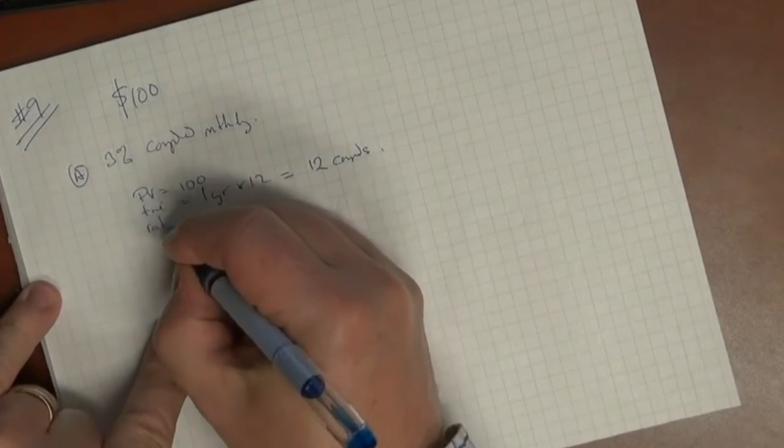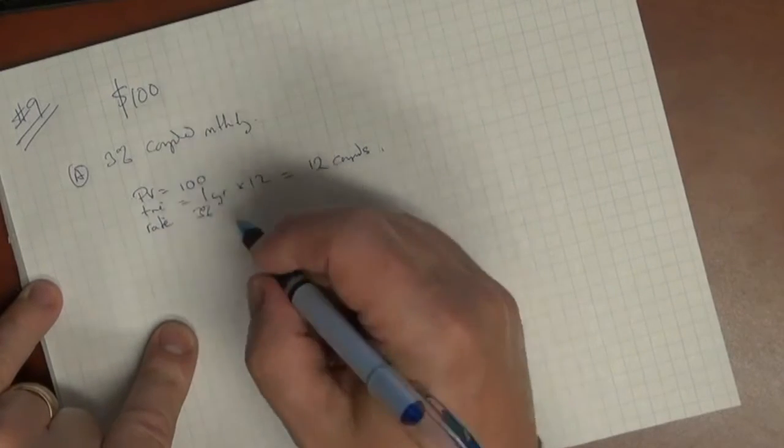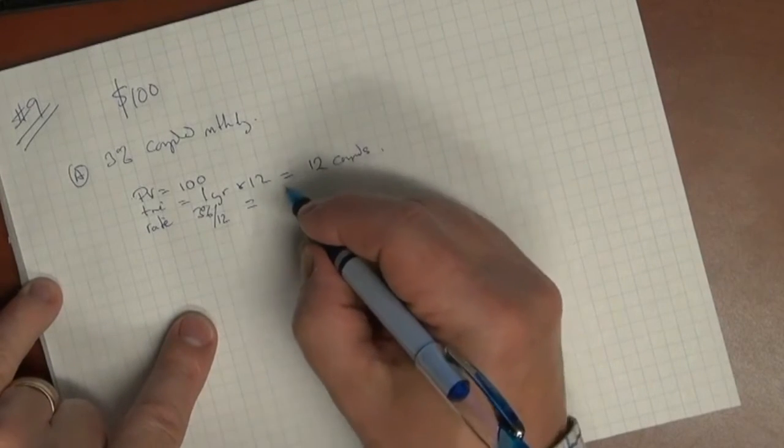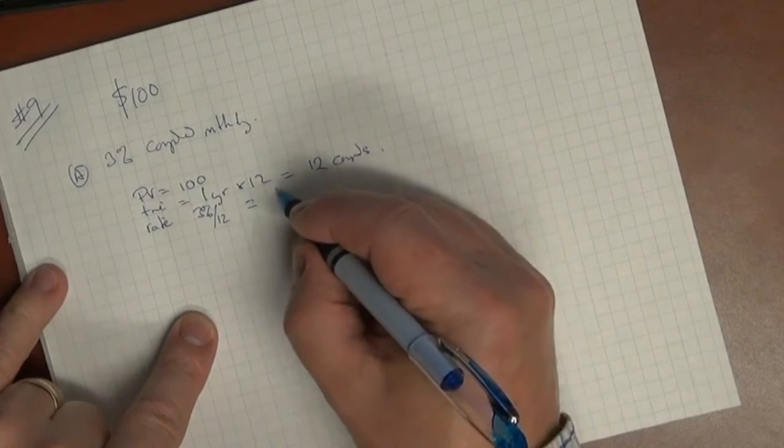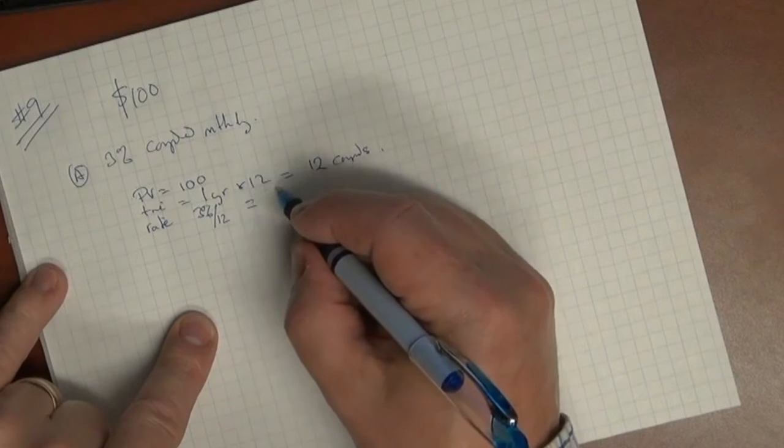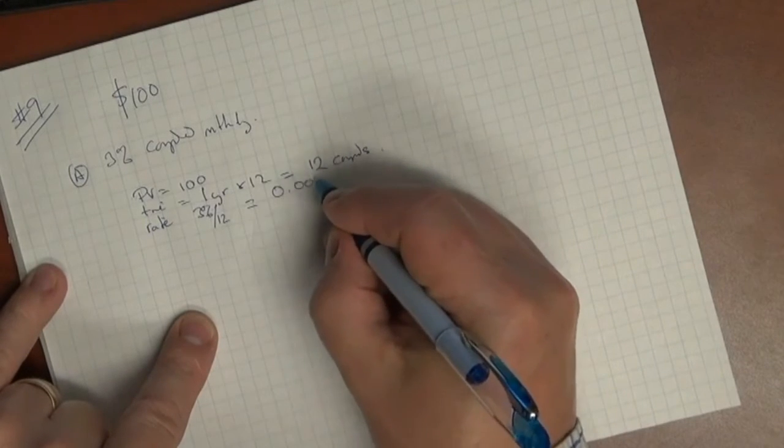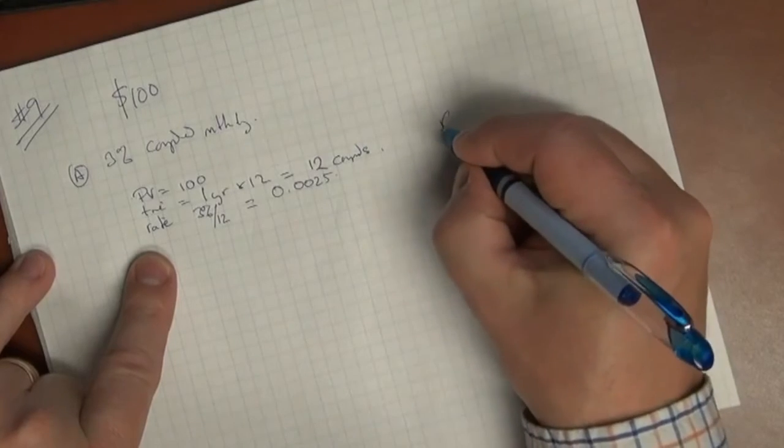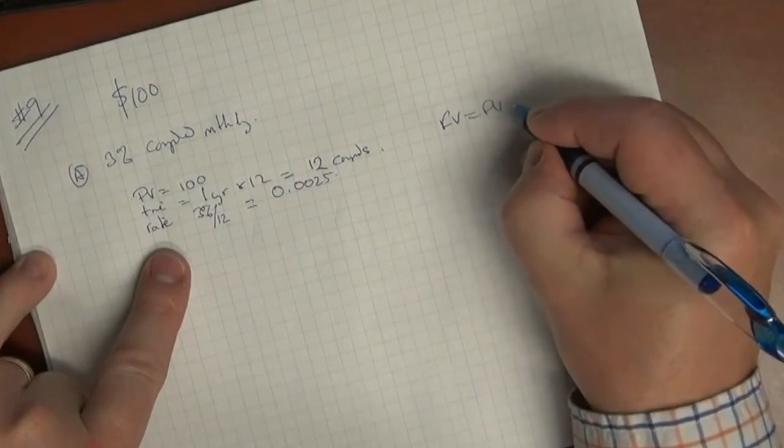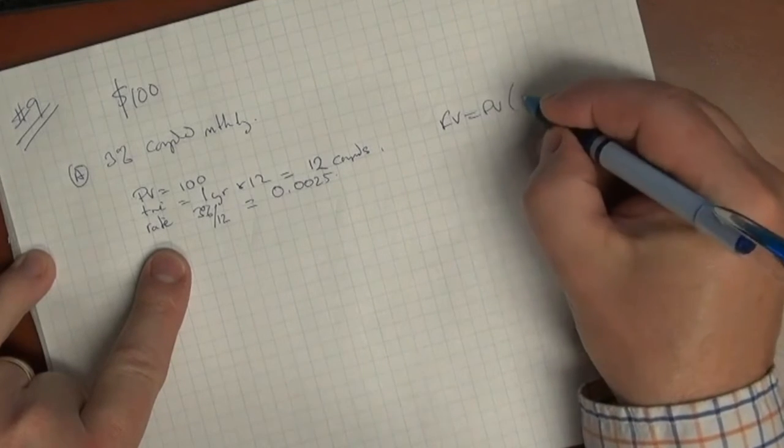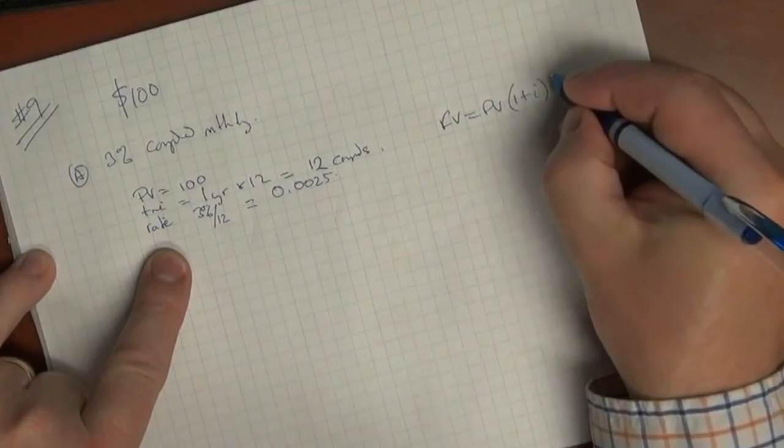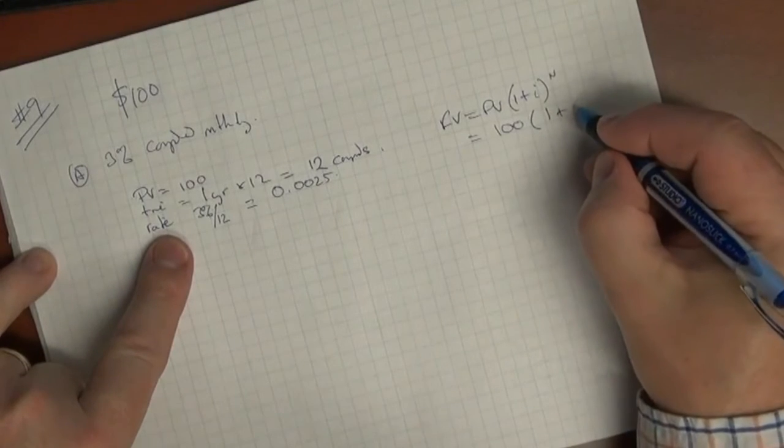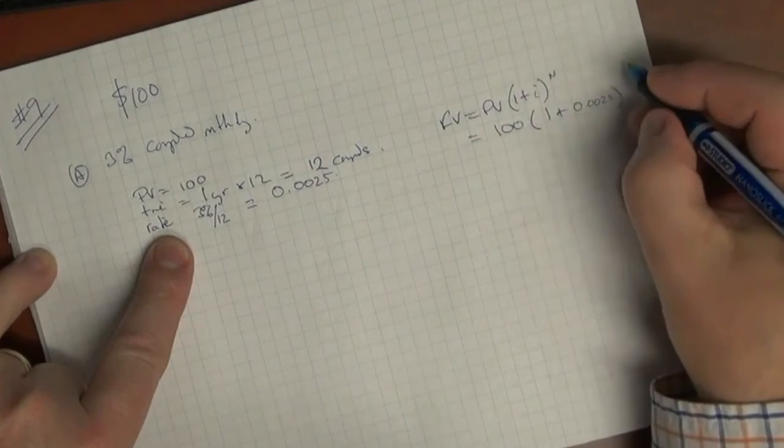And in terms of the rate, then, we take 3%, and we know that it's compounded 12 times. So 12, 3 divided by 12 would give you the rate there at, the rate, the prescribed rate, and that's 0.0025 as a decimal. So we simply plug those numbers into, we'll write out the FV equals PV 1 plus i to the n. And the present value is $100. 1 plus the i now is 0.0025 to the n, in this case 12.